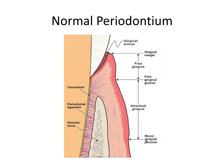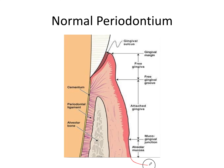If we go a little bit further down, we'll get to the mucogingival junction, which is exactly what the name suggests — it's a junction between the attached gingiva and the alveolar mucosa, hence mucogingival junction. And if we were to go a little bit further down beyond what this diagram shows, we'd have what's called the vestibular fold at the bottom, which would be the transition between the alveolar mucosa and the labial or buccal mucosa, depending on if you're near the lip or the cheek.